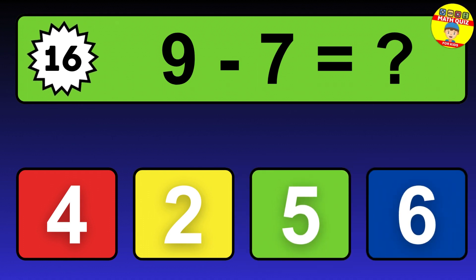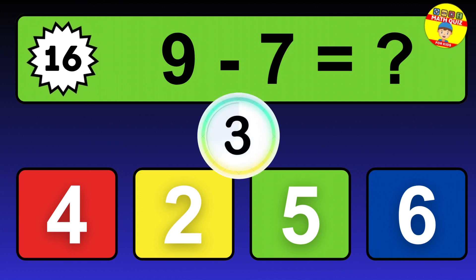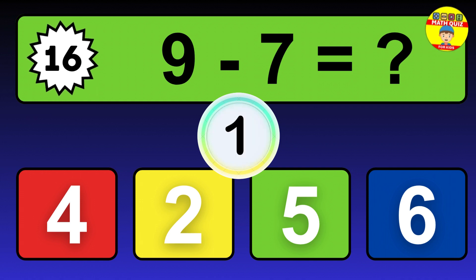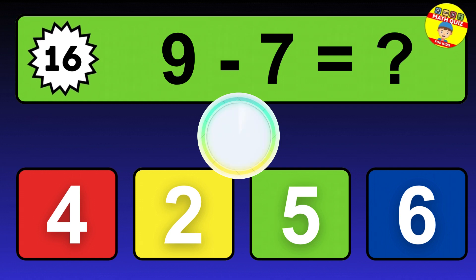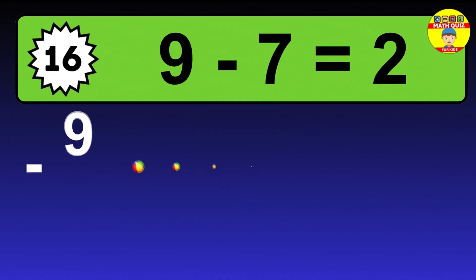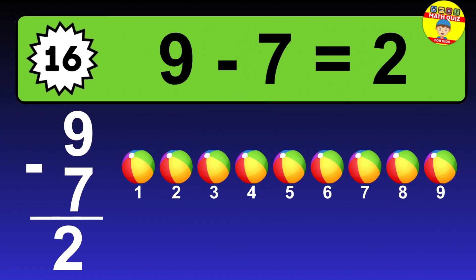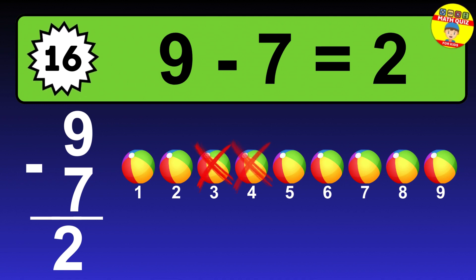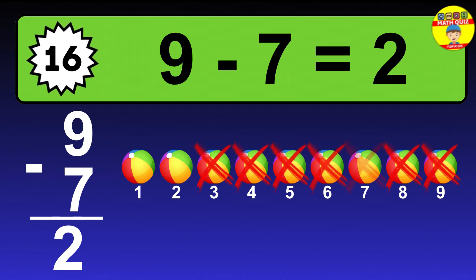Question 16. 9 minus 7 equals what? The answer is 9 minus 7 is 2. Let's count it: 1, 2.